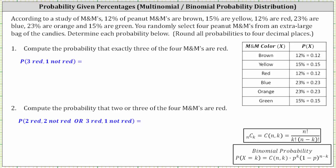According to a study of M&Ms, 12% of peanut M&Ms are brown, 15% are yellow, 12% are red, 23% are blue, 23% are orange, and 15% are green. These probabilities are recorded in the table on the right, and they sum to 100%. You randomly select four peanut M&Ms from an extra large bag. Because the bag is extra large, we assume these probabilities will not change as the M&Ms are selected. We are asked to determine each probability and round all probabilities to four decimal places.